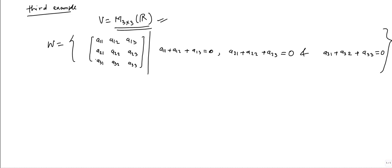And we are taking subset of all 3×3 matrices. This subset is the matrix with some condition. The condition is entries in a row sum up to 0. This is the first row sum up to 0, this is the second row entries sum up to 0, and this is the third row sum up to 0.